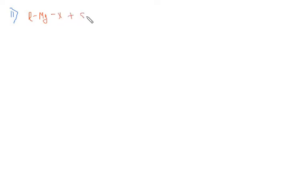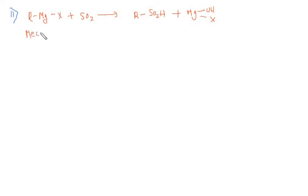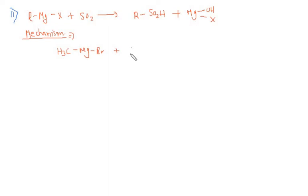With sulphur dioxide, the product will be RSO2H plus MgOHX. Let's see the mechanism. We will take an example of methyl magnesium bromide which is treated with sulphur dioxide — this is the structure of sulphur dioxide.